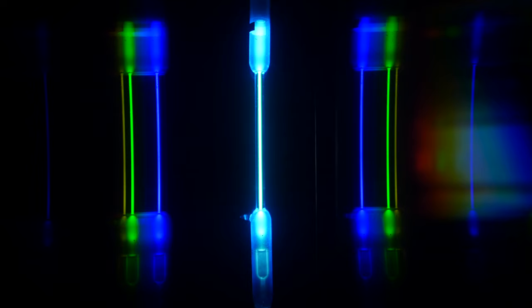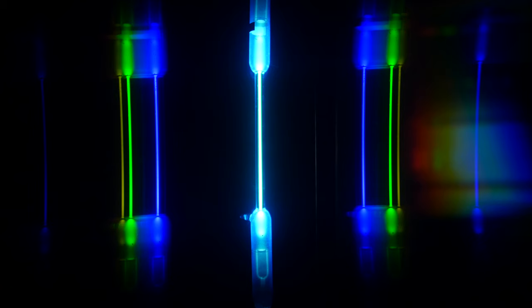Now let's try it with the diffraction grating in place. And what you see in this case are a green line and a blue line predominantly in this mercury spectrum.